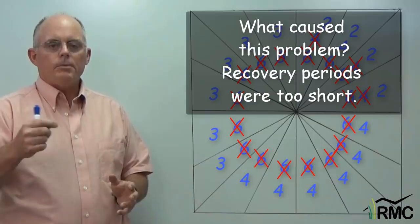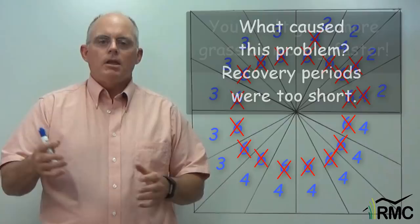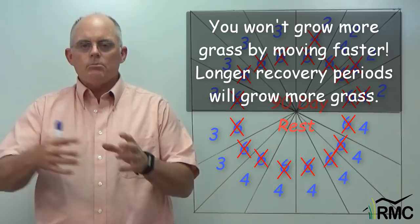This vicious cycle is a recovery period problem. He was out of grass, so he moved the herd. But he won't grow more grass by moving faster. He needs to stay longer in each paddock to provide more rest, more recovery for the paddocks, so that he grows more grass.